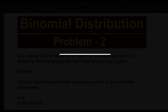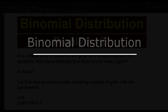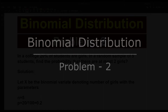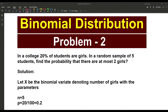Hello friends, today we are discussing the second problem of the binomial distribution. Let's check what the problem statement says. In a college, 20% of students are girls.